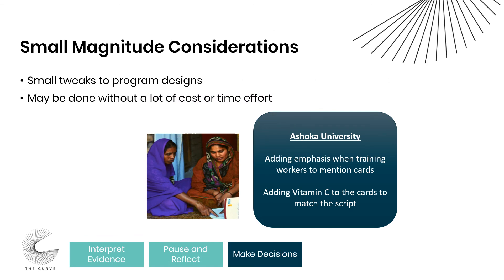In contrast, the Ashoka test case reflects a smaller magnitude change. Ethnographers realized the training card was not being shown in many instances, which could lead to a small tweak — just emphasizing to health workers during training that they should show the cards to the mothers. They also realized that vitamin C, which was emphasized in training scripts, was not present on the card. Although this involved reprinting the card, it was a small change that didn't impact the overall course of the program or its objectives. These were changes that were implemented fairly easily as smaller adaptations to program content.